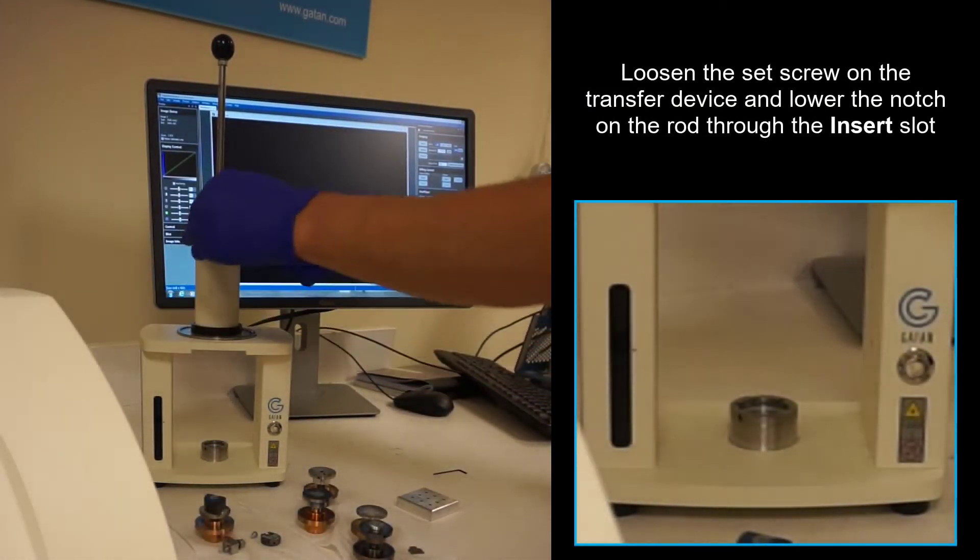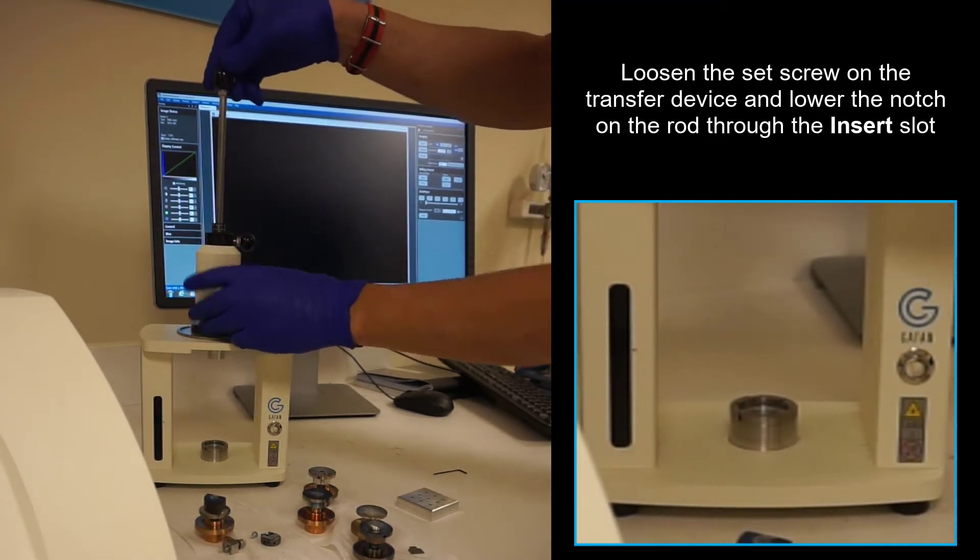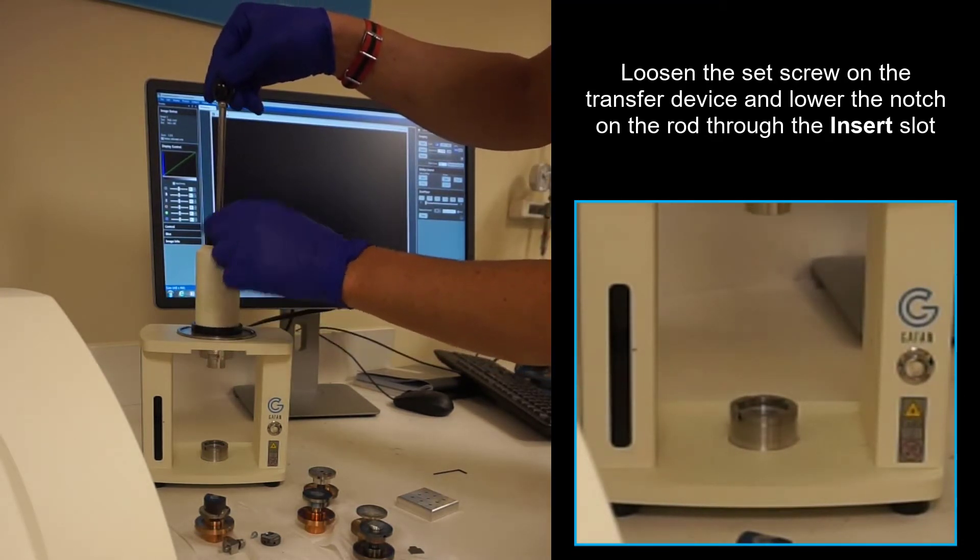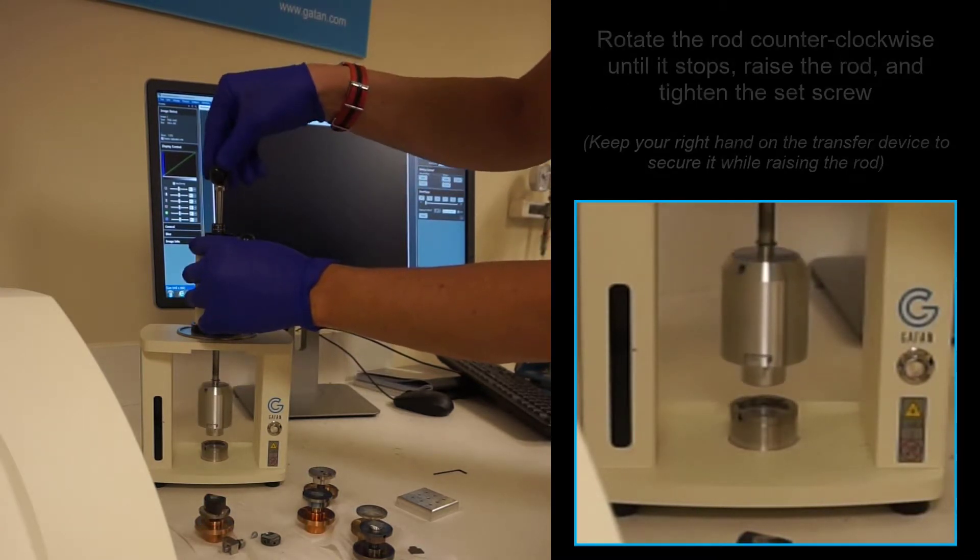When removing the sample, you just do the reverse action. There's a little notch up here, and it will slide down in one of these two slots depending on whether you're inserting or removing a sample, which is marked on the front face.